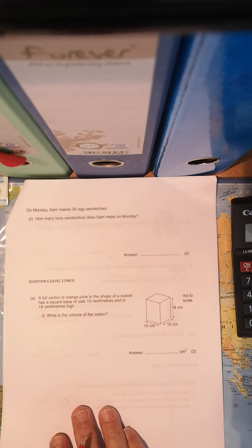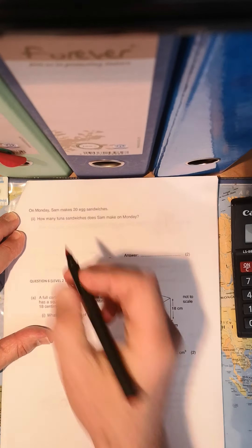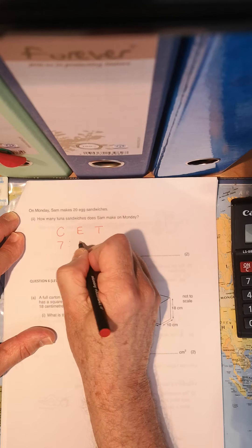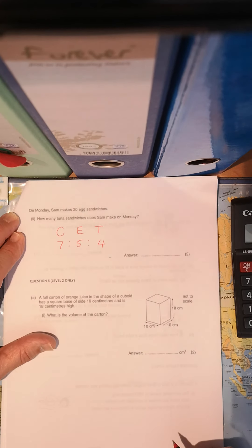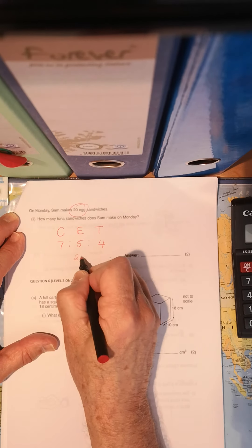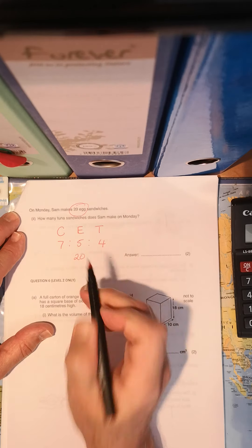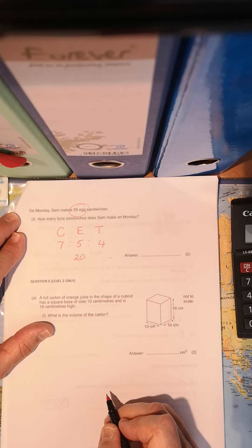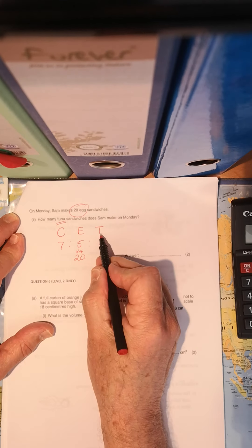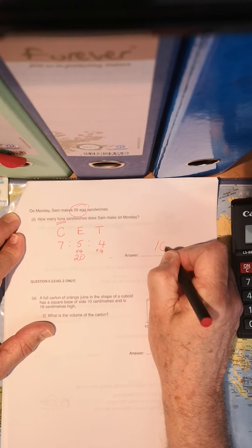Moving on. On Monday, Sam makes 20 egg sandwiches. So let's do it again. Cheese, egg, and tuna in the ratio, remember, 7 is to 5 is to 4. He makes 20 egg sandwiches. It's beginning to look familiar to you. So look at the egg. 5, 20. How did I get from 5 to 20? Yes, I multiplied it by 4. So to answer the question, how many tuna sandwiches, all we do is we multiply that by 4 as well, and our answer is 16.